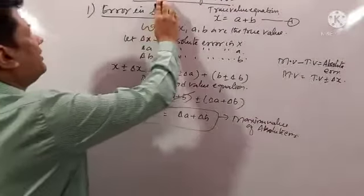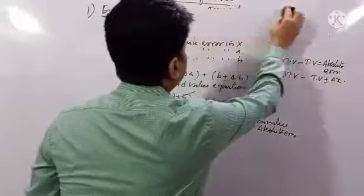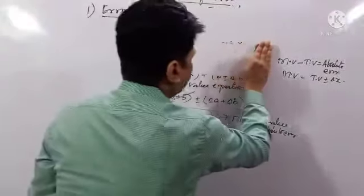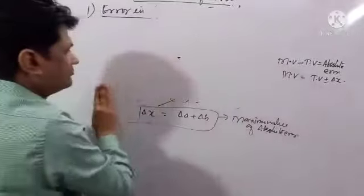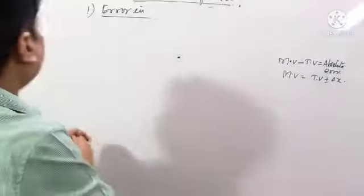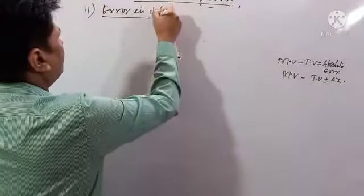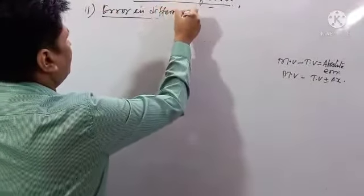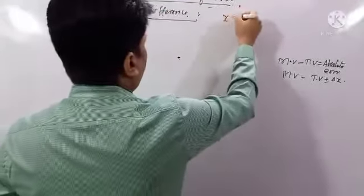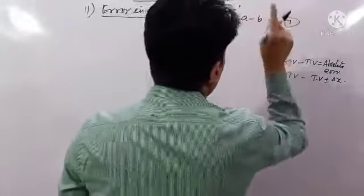If we have the difference case — error in difference. Second case: error in difference. Like x equals a minus b. This is the equation for the true value.